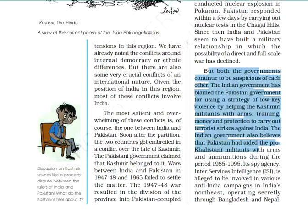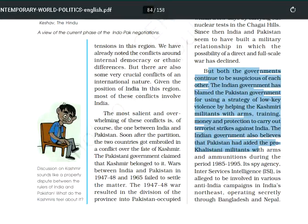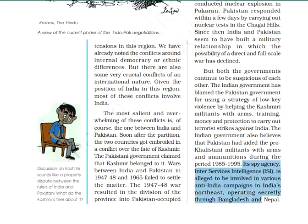There is a lot of violence against the Indian army personnel. The Pakistani government is also alleged to have aided Khalistani militants with arms and ammunition from 1985 to 1995. The spy agency ISI is alleged to be involved in various anti-India campaigns, not only in Kashmir but also in India's North East, operating secretly through Bangladesh and Nepal.